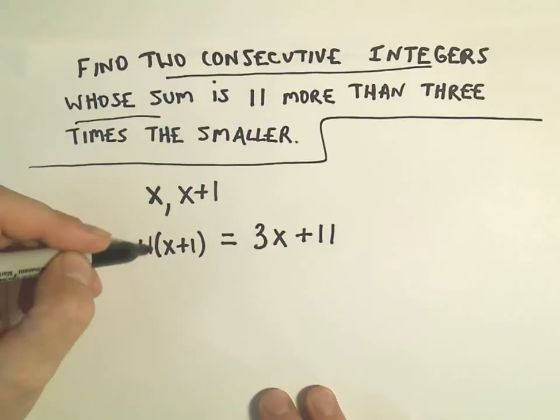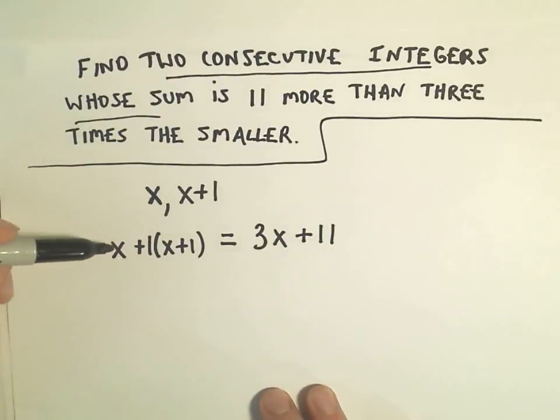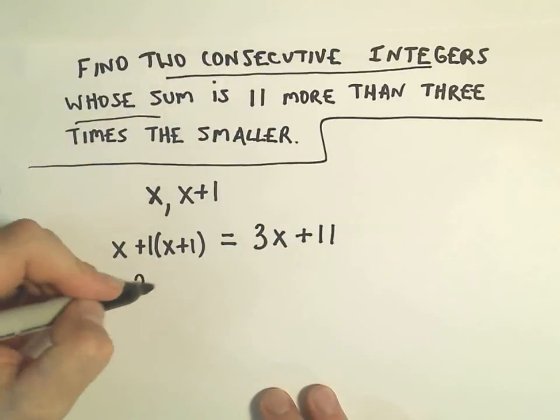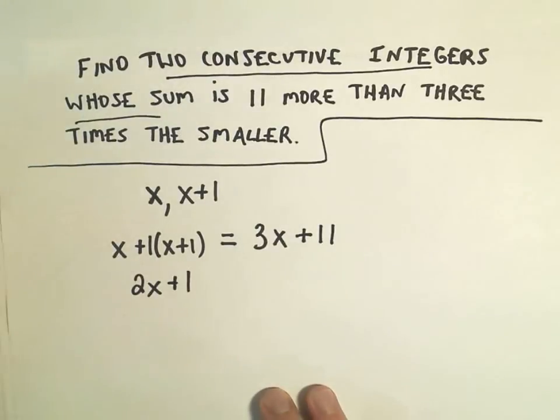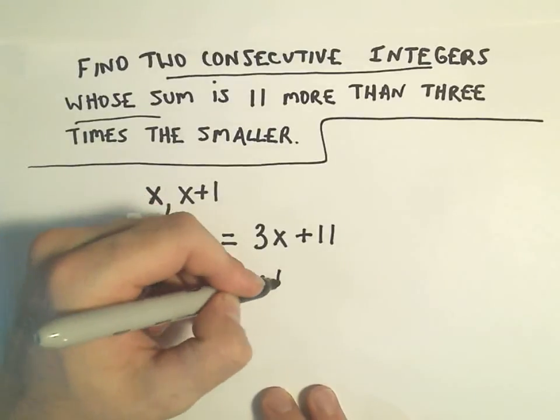You can imagine there being a positive 1. If we distribute that, we'll get x plus 1. On the left side, we have x plus x, which is 2x, plus 1 left over. On the right side, we have 3x plus 11.